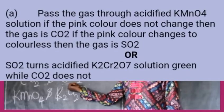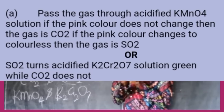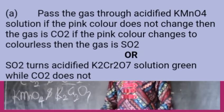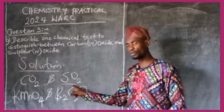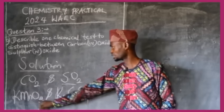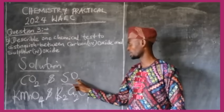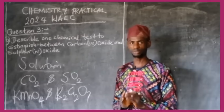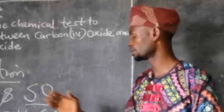A color change to colorless shows the presence of sulfur dioxide, whereas carbon dioxide will have no effect on the purple color of KMnO4 or K2Cr2O7. That is the chemical test to differentiate between carbon dioxide and sulfur dioxide. Remember: SO2 is a reducing agent; CO2 is not. Using either oxidizing agent, a color change from purple to colorless indicates SO2, while if the purple color remains, CO2 is present.